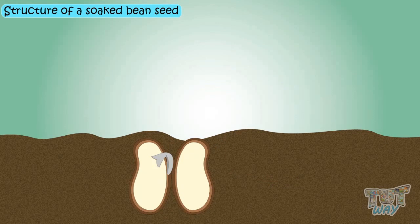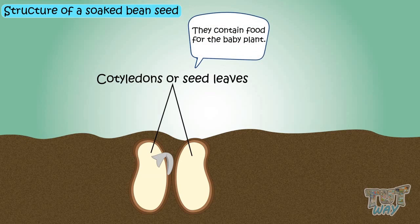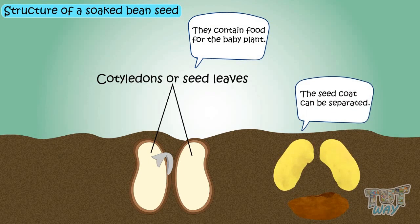You will see two halves called cotyledons, or seed leaves. They contain food for the baby plant. The seed coat can be separated.